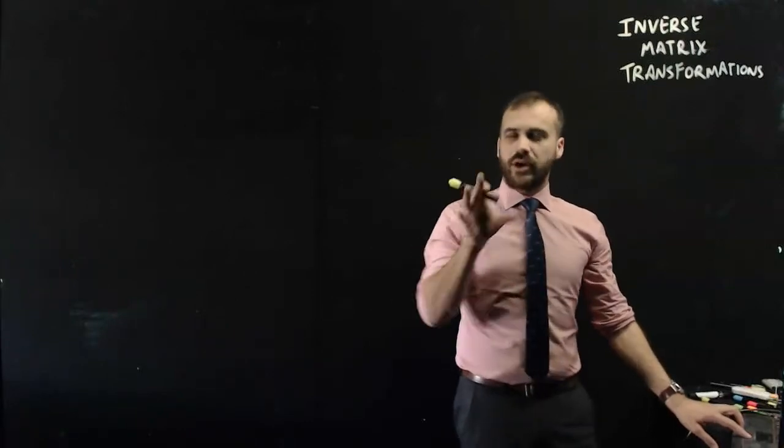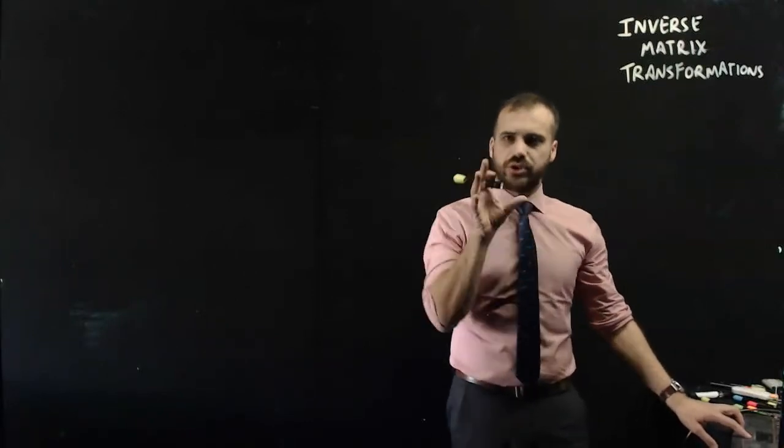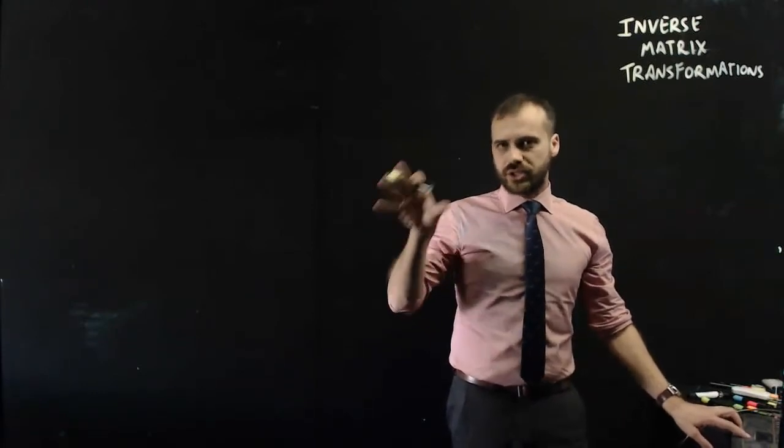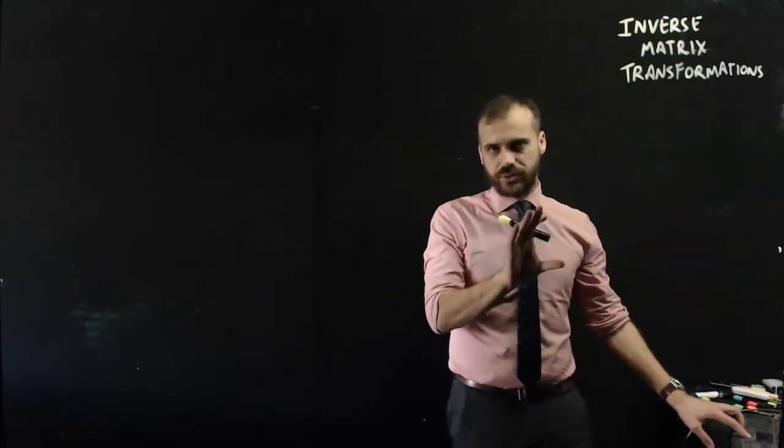So far we've been working on the idea that we have an object, we do a transformation on it, and we get an image. But what if I show you an image? How can you find the original object?